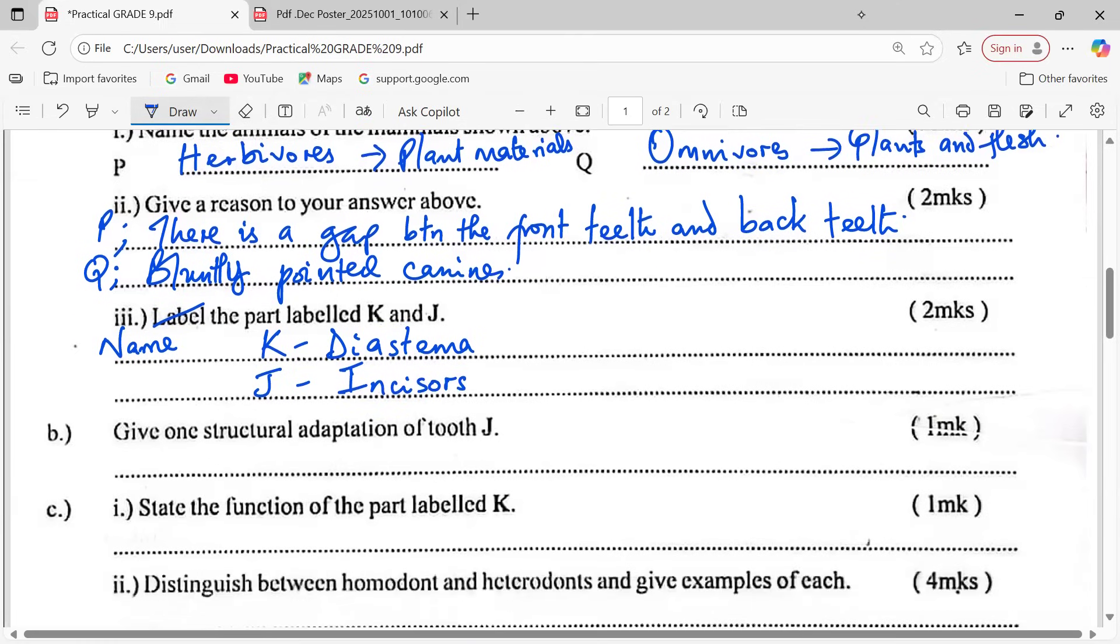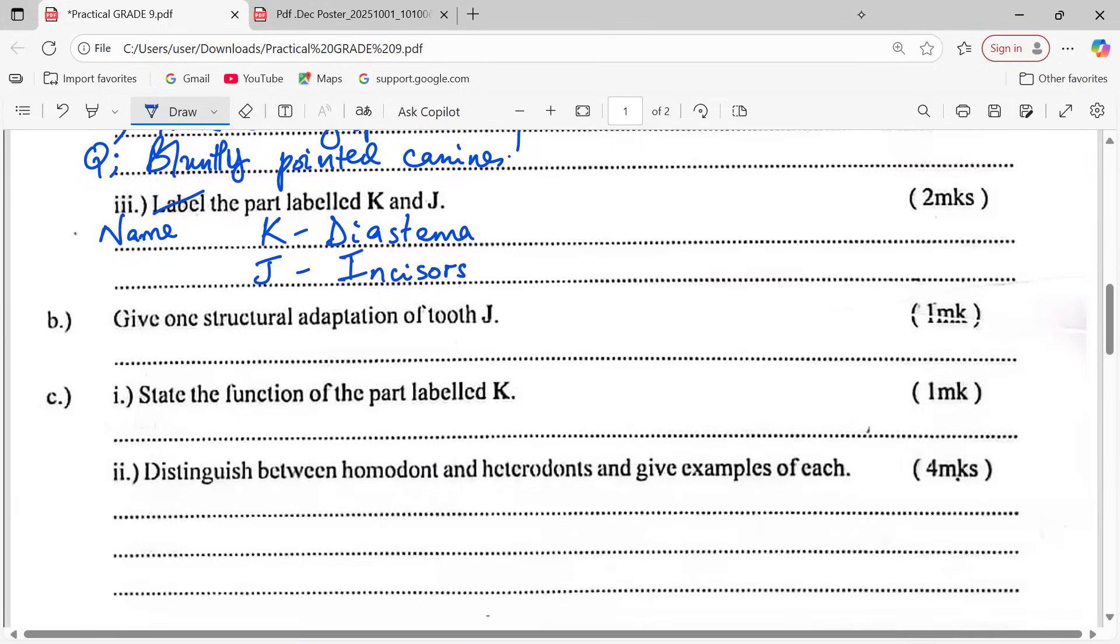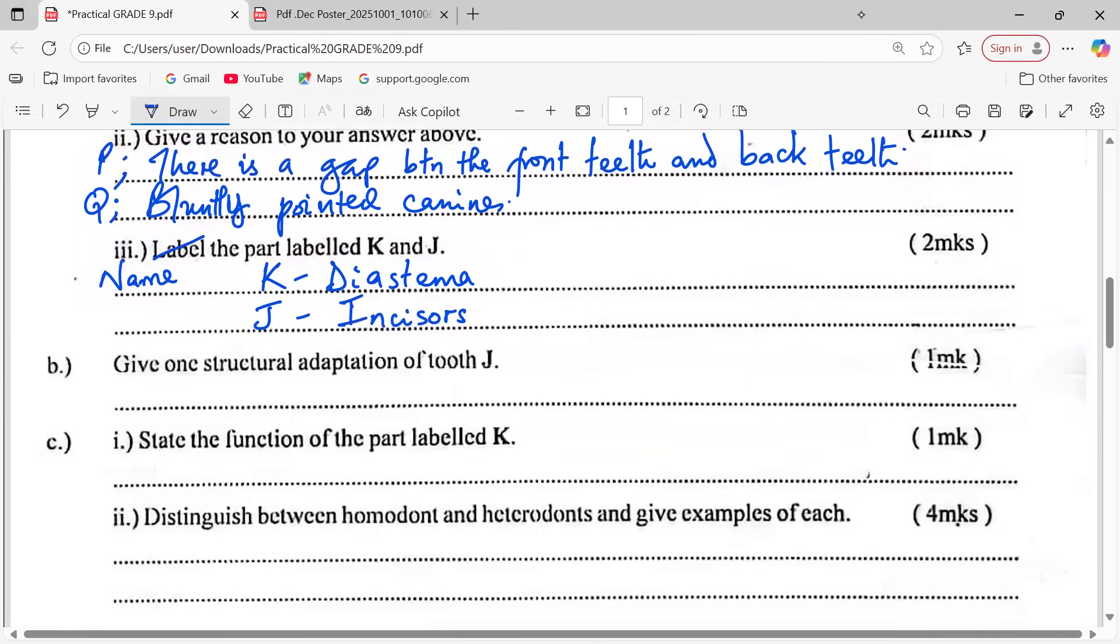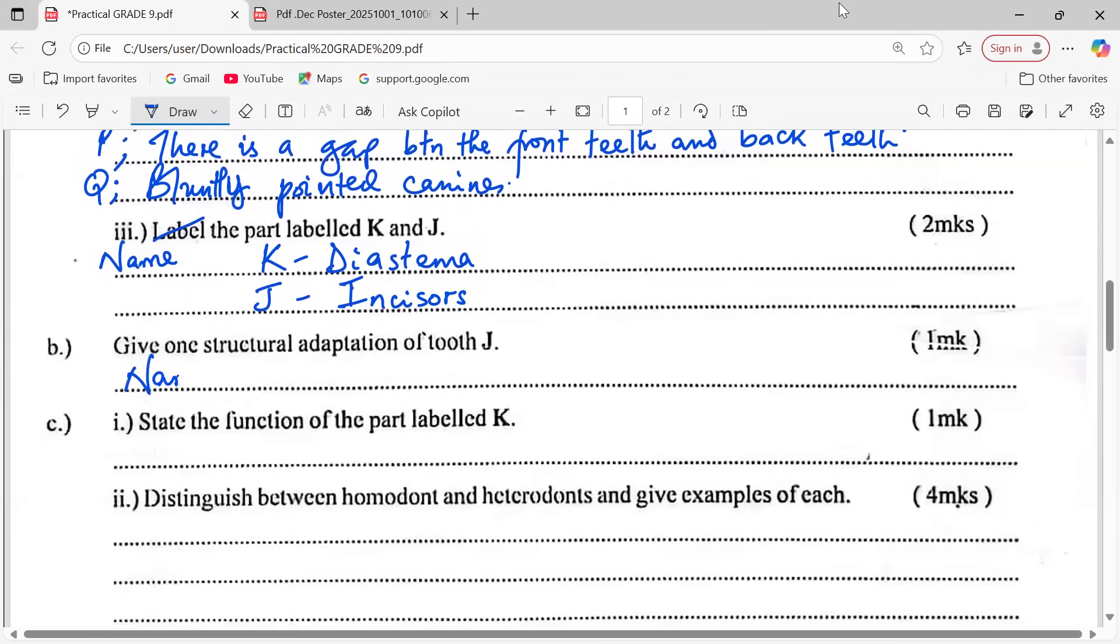Give one structural adaptation of the incisors. They are narrow. Look at J. They are narrow, sharp and chisel-shaped. There are many features: narrow, sharp, chisel-shaped for proper tearing or pattern of plant materials.